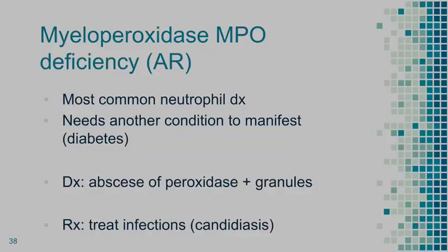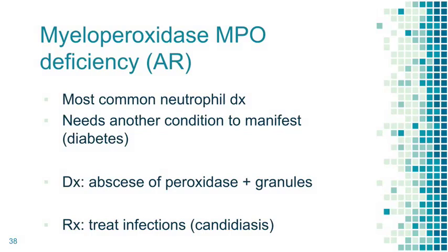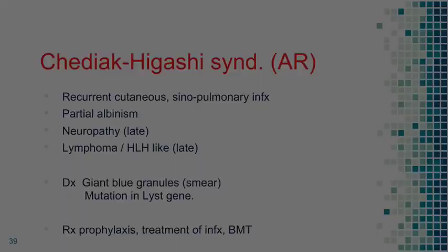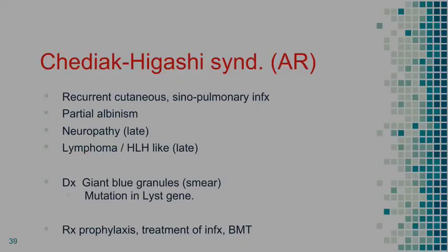Myeloperoxidase deficiency: autosomal recessive, the most common neutrophil abnormality, and usually needs another condition to manifest. Presents with skin and soft tissue abscesses; on pathology you actually see the granules. Treatment is to treat infections. Really, if you see a diabetic with very bad candidiasis, think about this — it's primarily a pathological diagnosis.